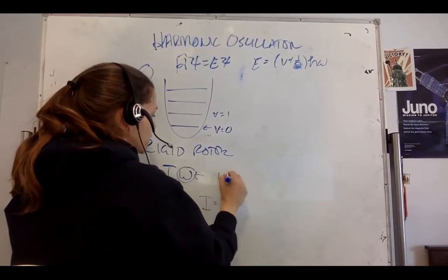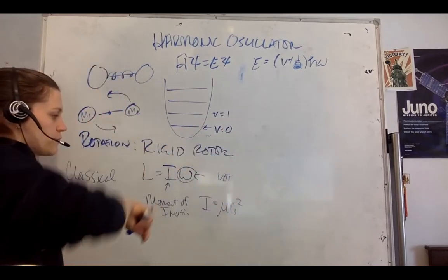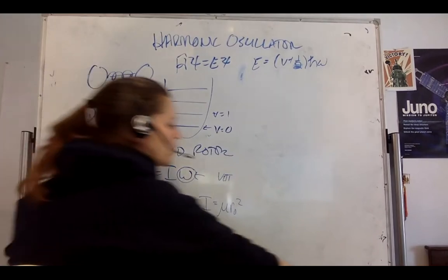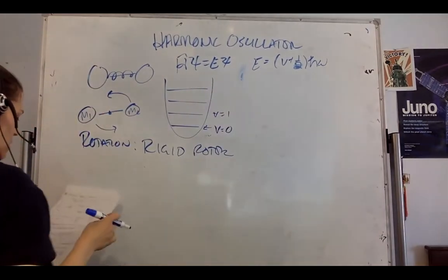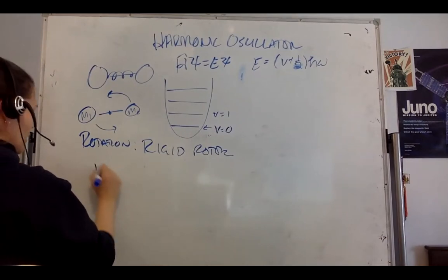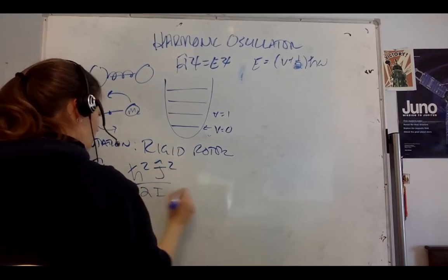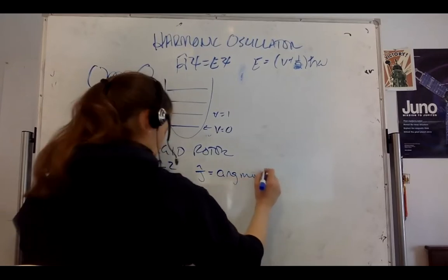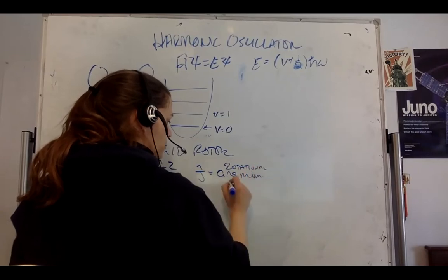This is your angular frequency, which is your frequency times 2π, and that's your angular momentum. But we don't want to do classical, we want to do quantum. So quantum angular momentum is quantized. Our Hamiltonian is ℏ²Ĵ²/2I, where Ĵ is the rotational angular momentum operator.